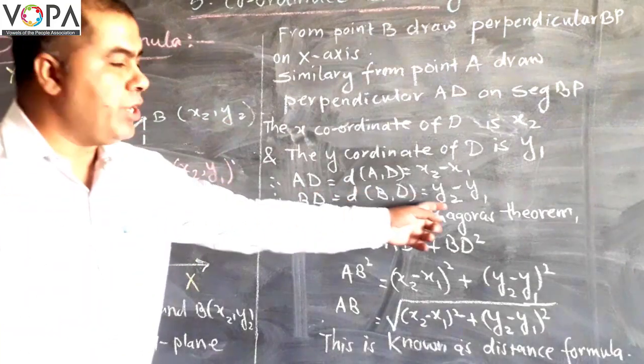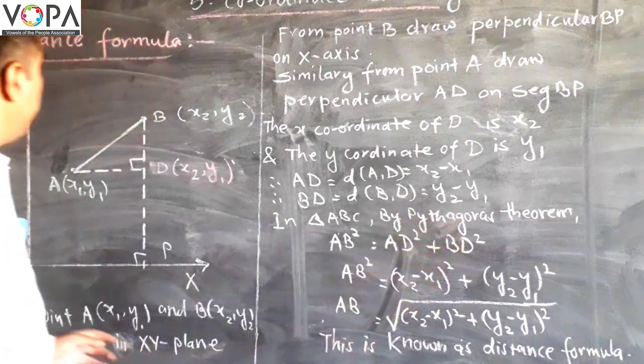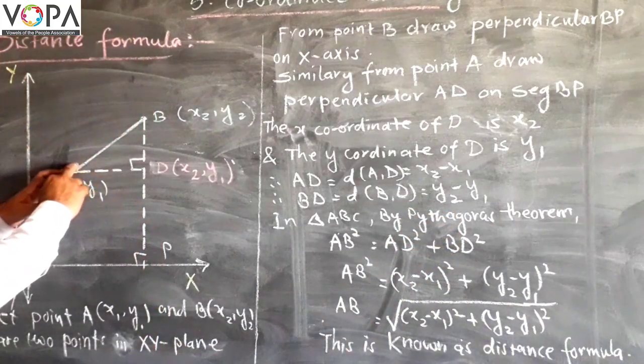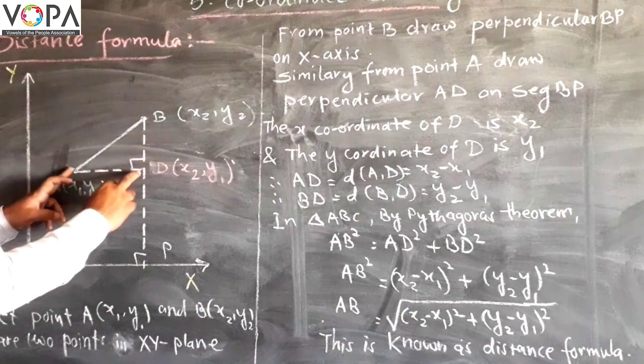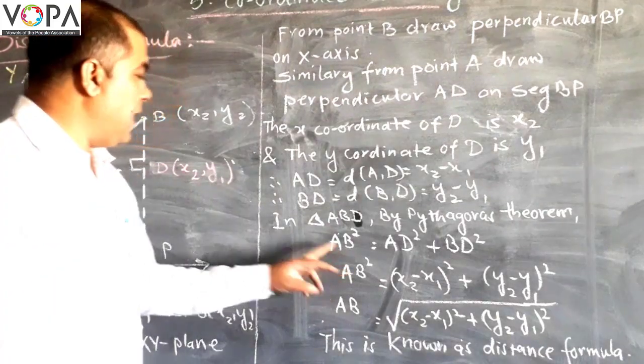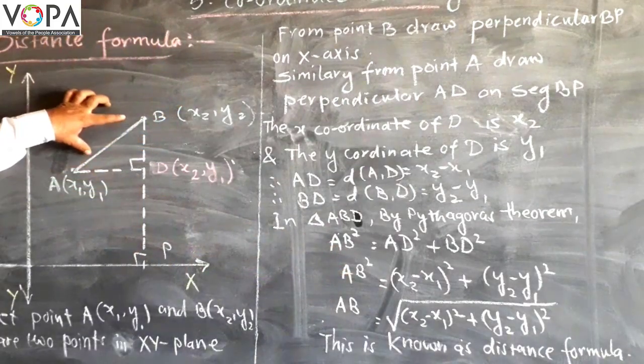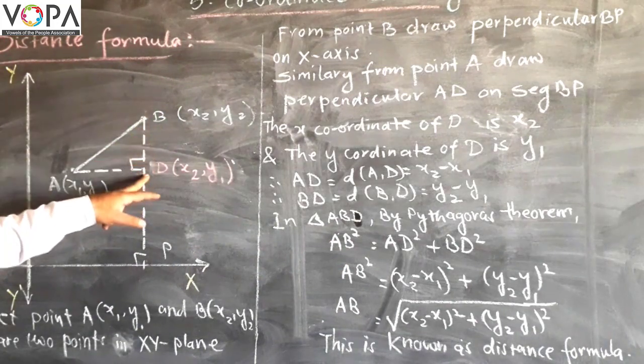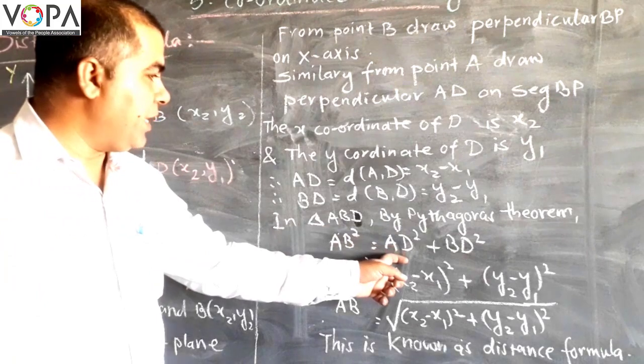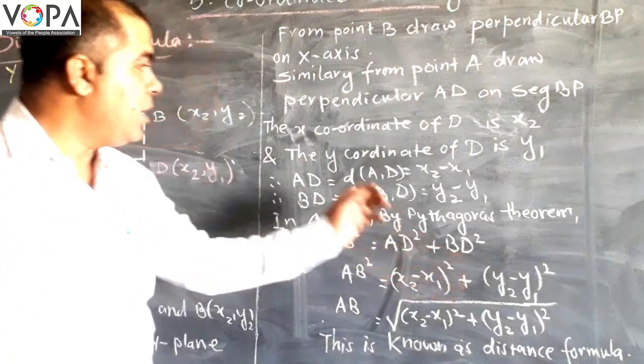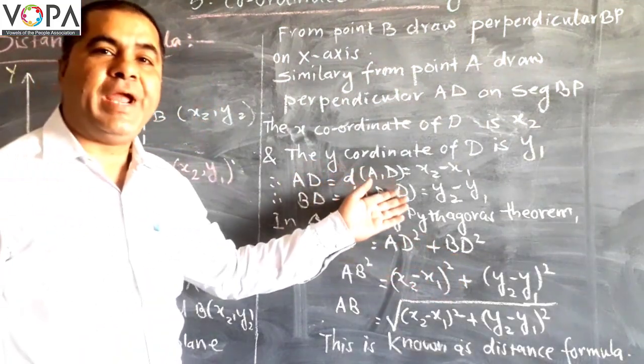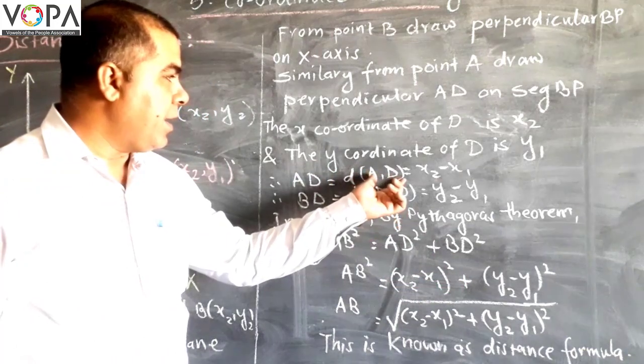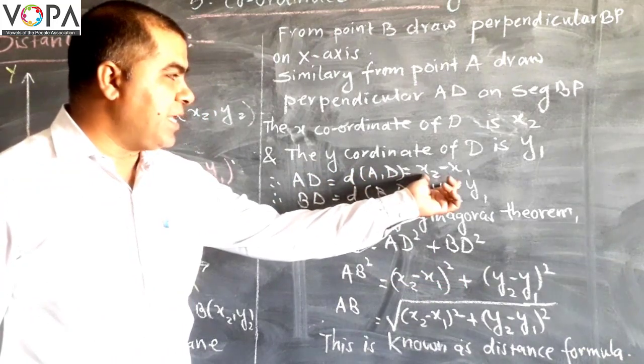Now in triangle ADB, by Pythagoras theorem, AB square equals AD square plus BD square. Now substitute the values of AD and BD. AD is x2 minus x1 bracket square and BD is y2 minus y1 bracket square.